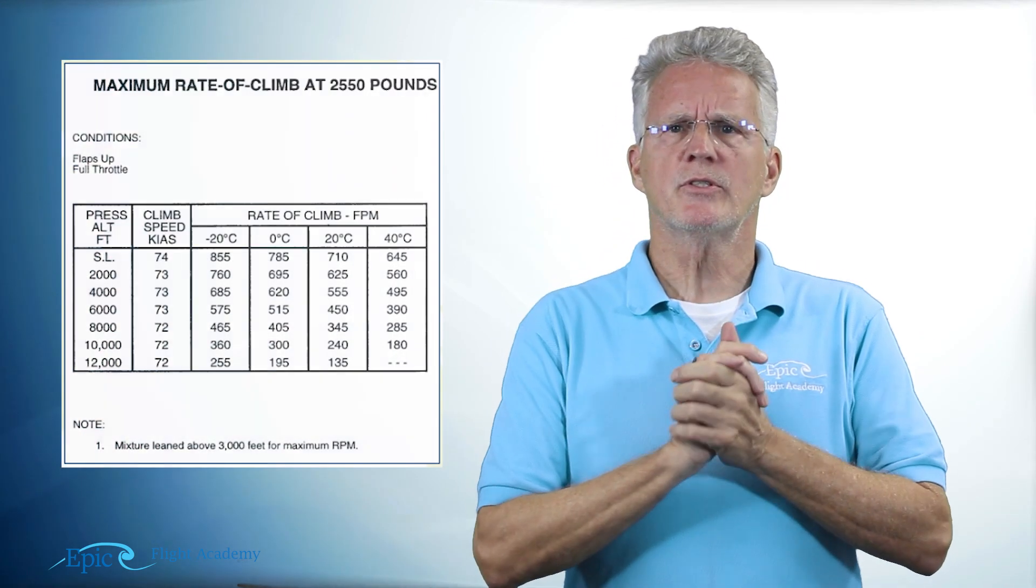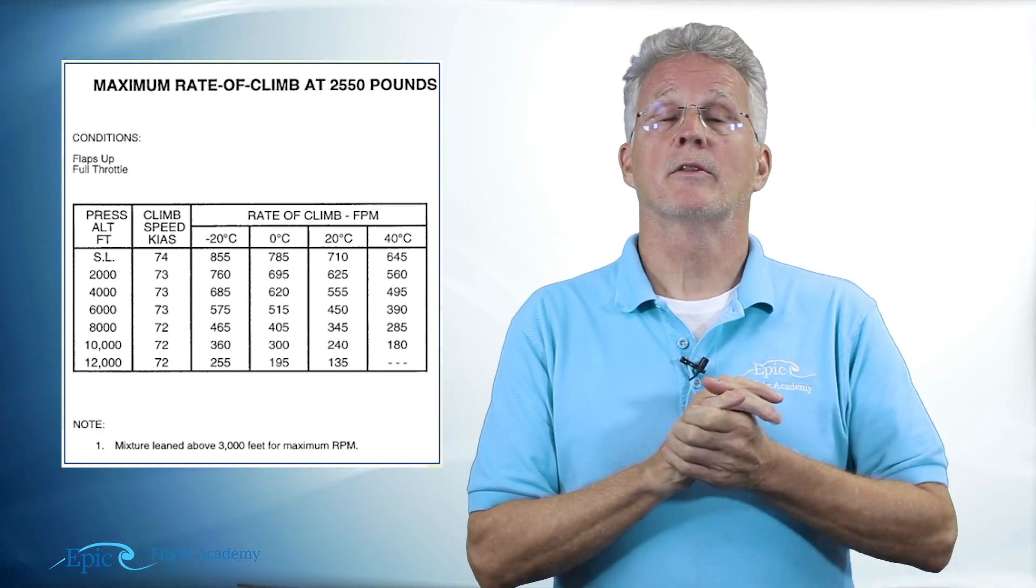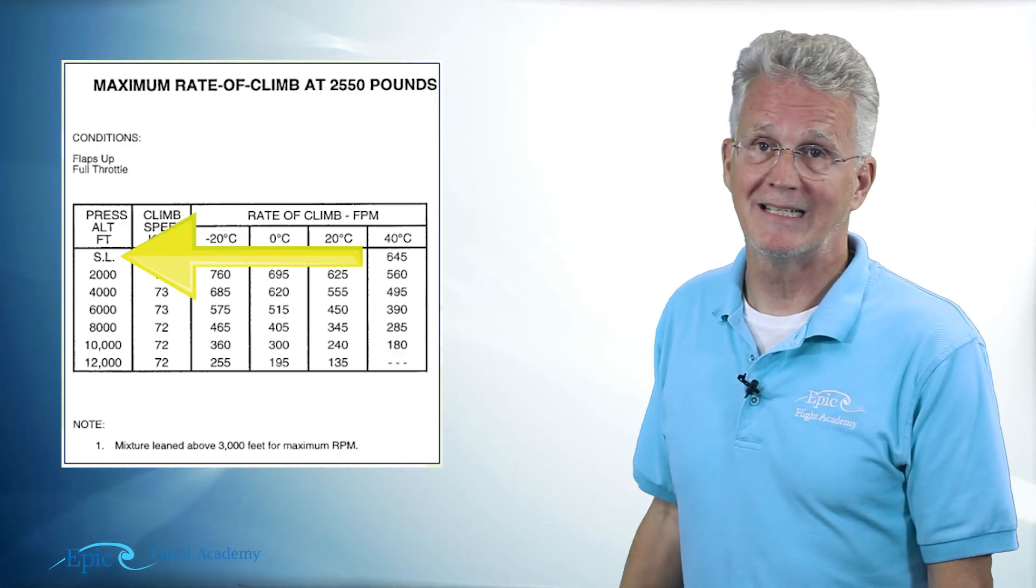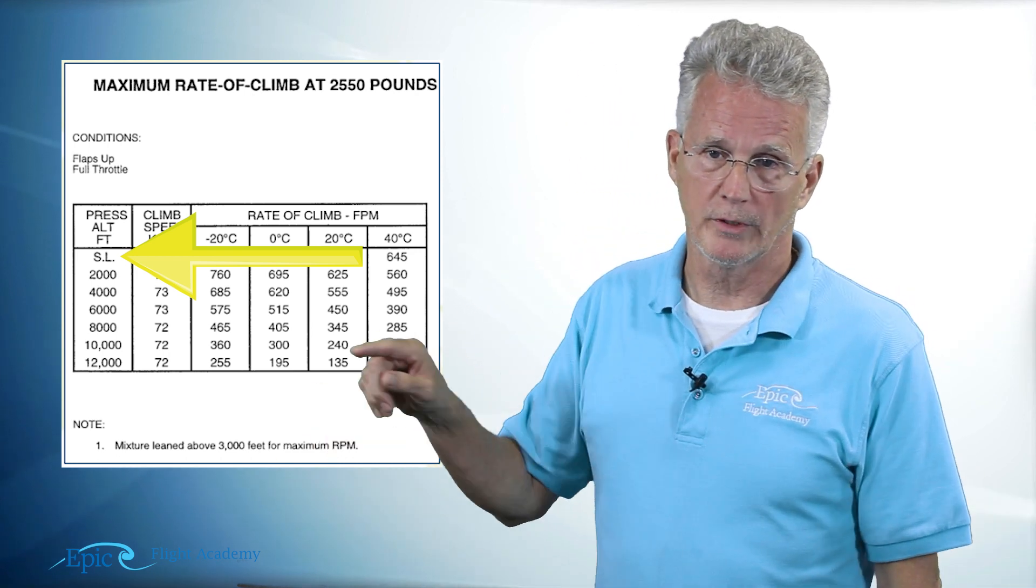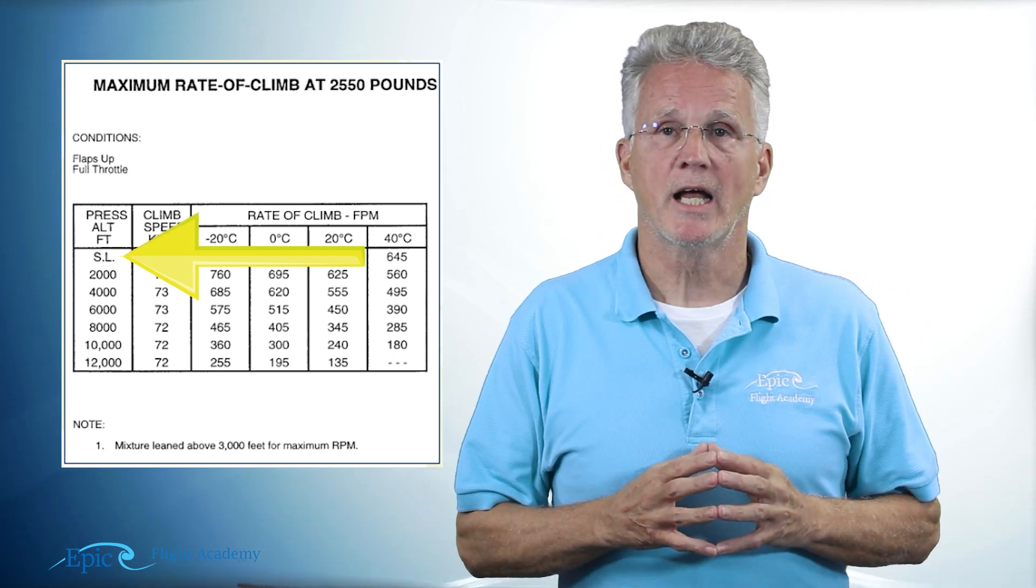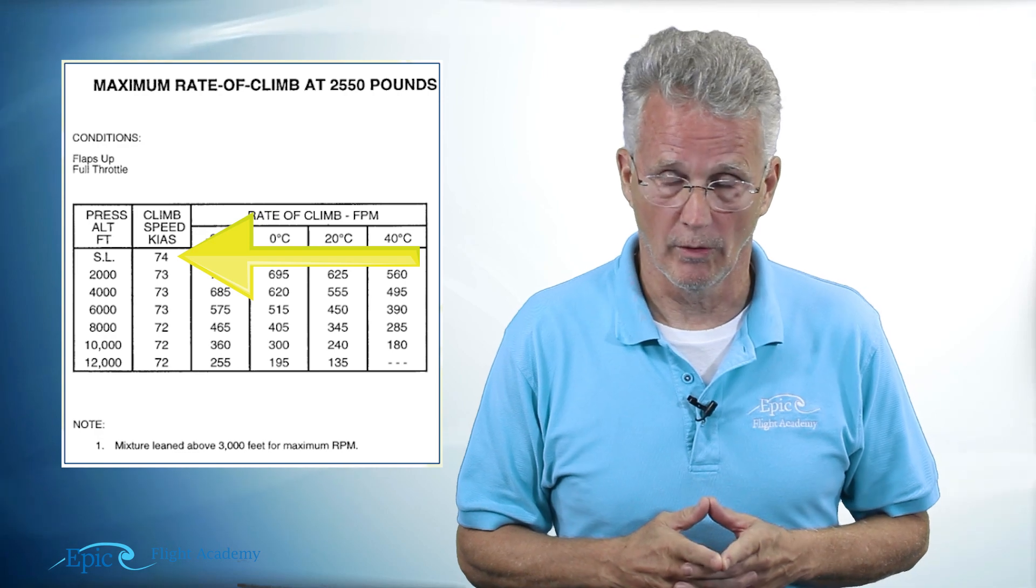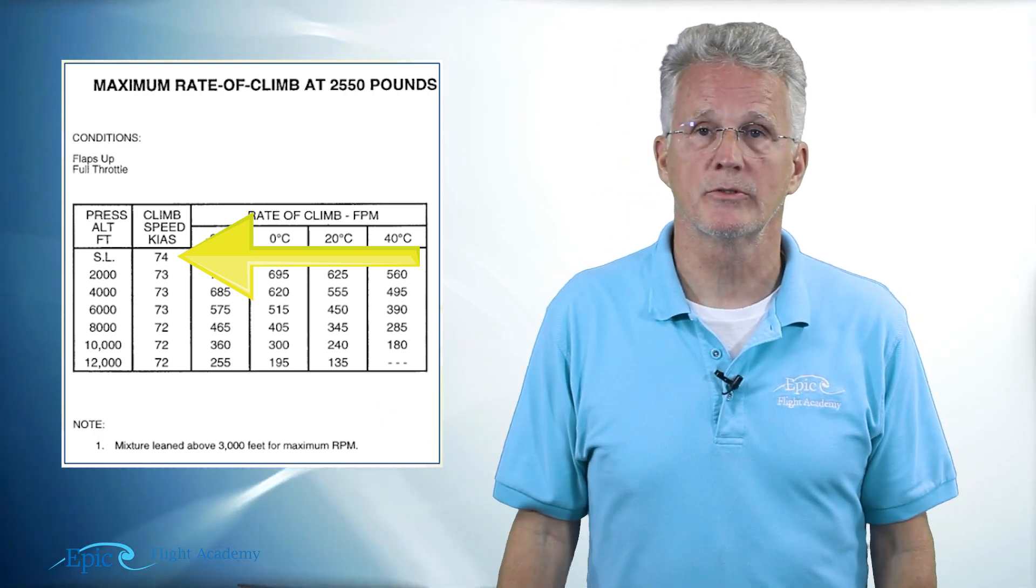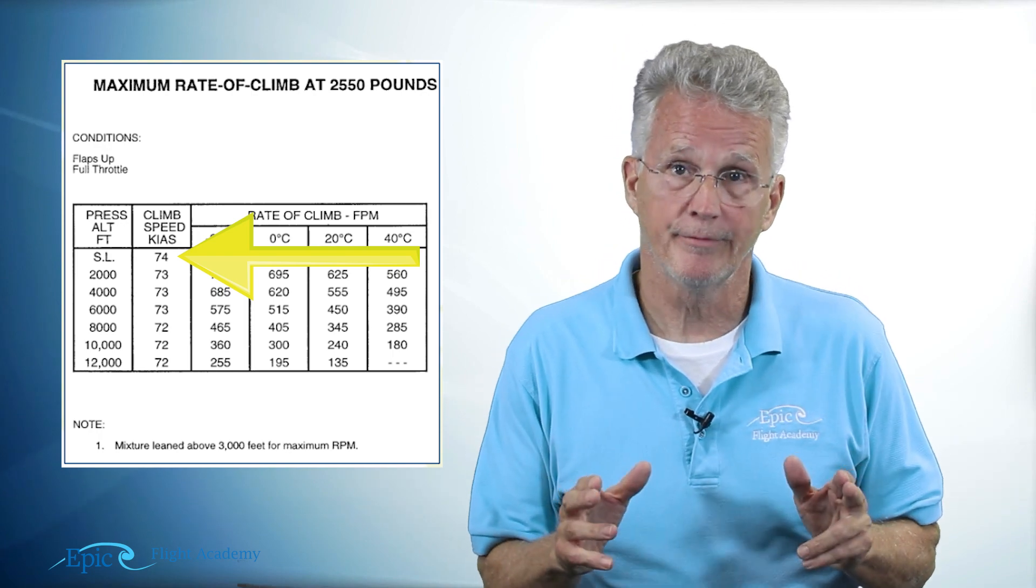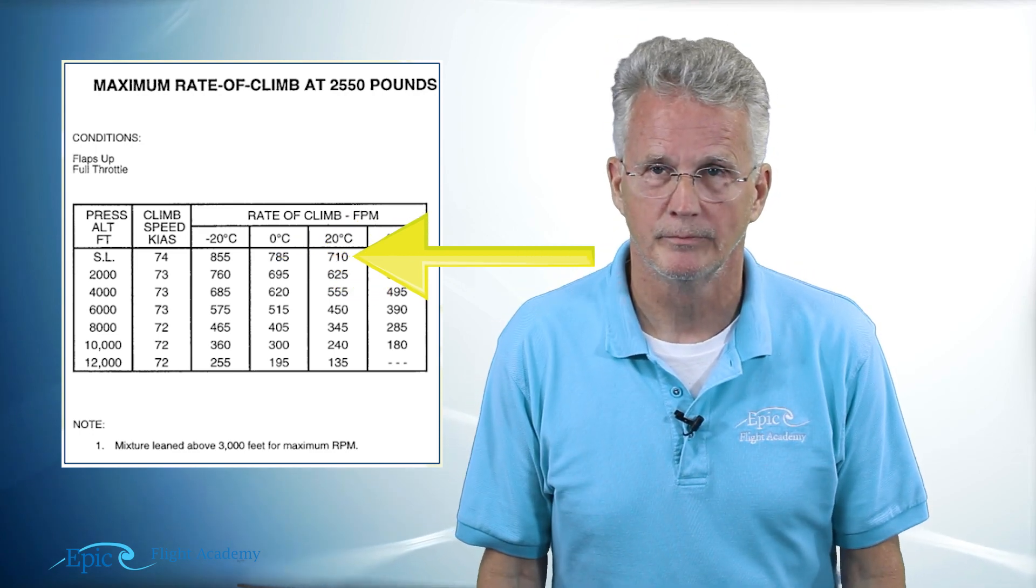Let's take a look at this chart. Let's say that I am at a pressure altitude of sea level and the current temperature is 20 degrees Celsius. I come to the pressure altitude column, I see SL for sea level, and I move horizontally. As I move horizontally, my climb speed in knots indicated airspeed (KIAS) will be 74. As I move across to the 20 degrees Celsius column, I see I should expect a rate of climb in feet per minute of something pretty close to about 710 feet per minute.